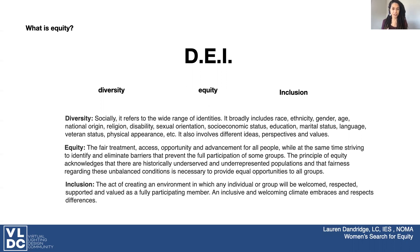I was able to find one at the University of Washington's glossary in their DEI department. For them, they're defining equity as the fair treatment of access, opportunity and advancement for all people, while at the same time striving to identify and eliminate barriers that prevent the full participation of some groups. The principle of equity acknowledges that there are historically underserved and underrepresented populations and that fairness regarding these unbalanced conditions is necessary to provide equal opportunity to all of those groups.